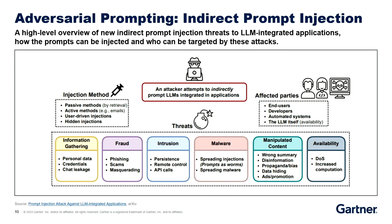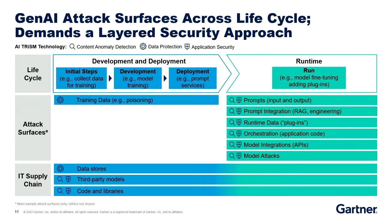To summarize, the attack surface and the compromise surface has increased. We've got the lifecycle, the attack surfaces, and the IT supply chain. The blue shows the steps you take if you're developing a model or an application — in that case you have to worry about the training data and your IT supply chain. Most of us are using third-party Gen AI models, so we're all subject to runtime lifecycle steps. The main new attack surfaces include the prompts, the inputs and outputs, prompt integration, plugins, application code, APIs, and the IT supply chain.